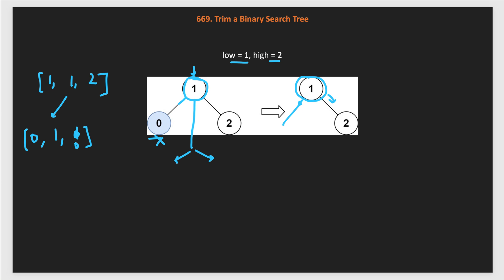Similarly, we process for the right. The bounds for the right become root dot value plus 1 as the lowest bound and the original high (2) as the upper bound — so 3 to 2. We check: yes, the right node (value 2) is in the bound. We take this node, process its left and right, but there are no further nodes in the original tree, so they are null. The final tree after trimming has root 1 with right child 2.